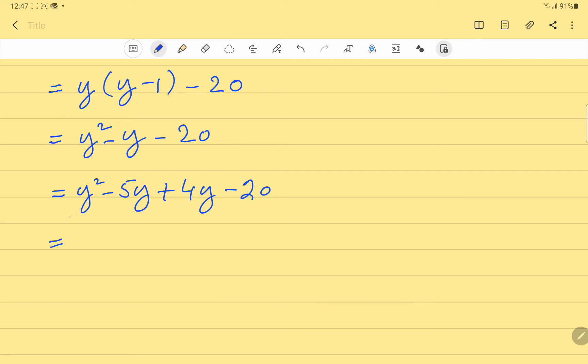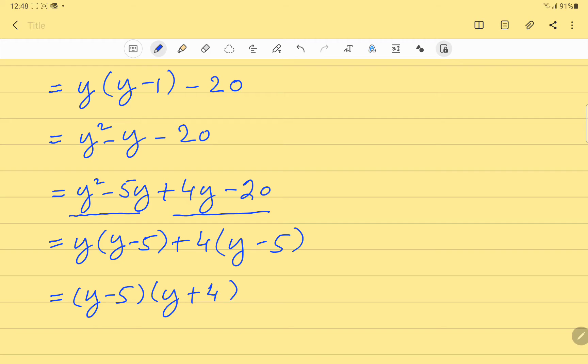In the first two terms y is common. And in the last two terms 4 is common. And now, in both the terms (y minus 5) is common. And whatever is left is the (y plus 4) which will be in the second bracket.